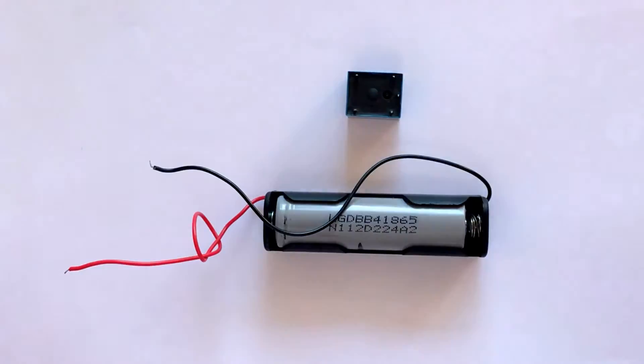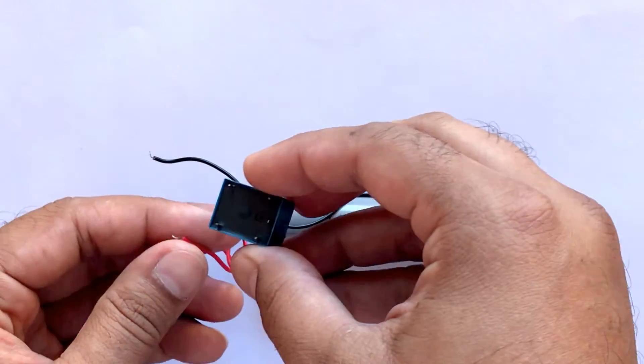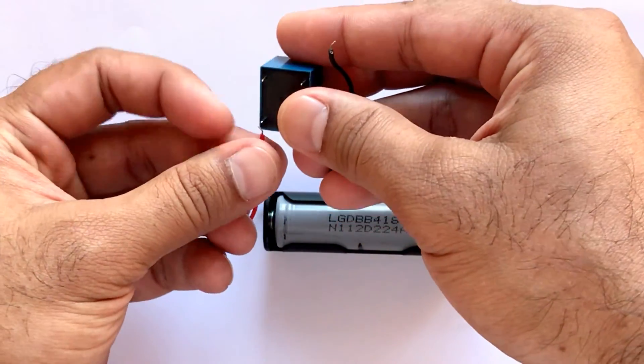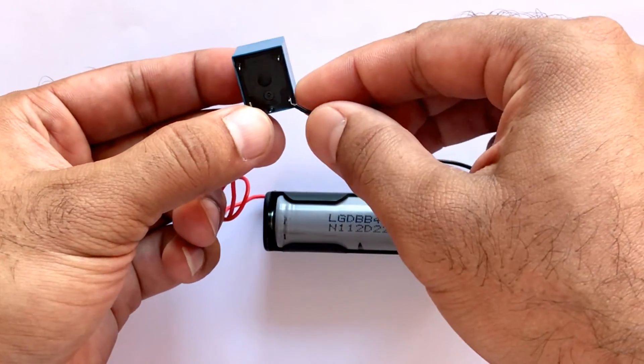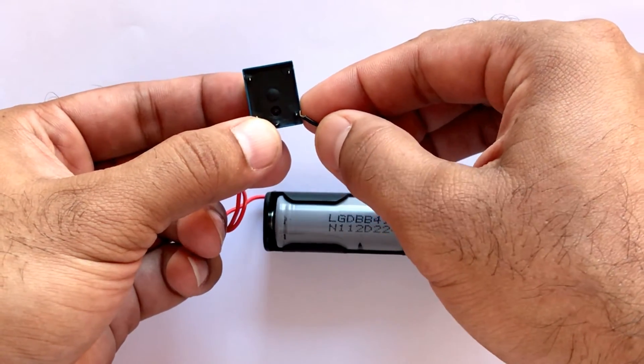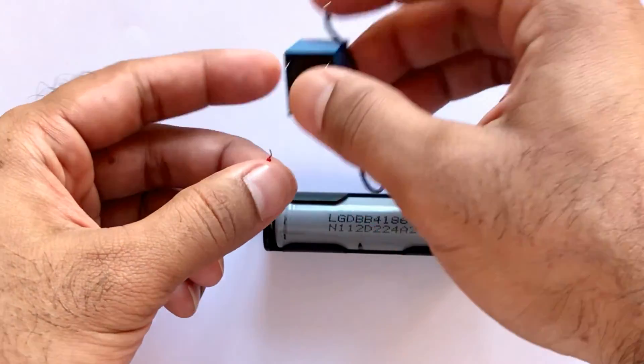This relay has no polarity marked on it since the internal suppression diode is not present. Hence, the positive output of the DC power supply can be connected to any one of the coil pins. If we connect our battery to the right pins, you can actually hear a clicking noise when it's magnetized.